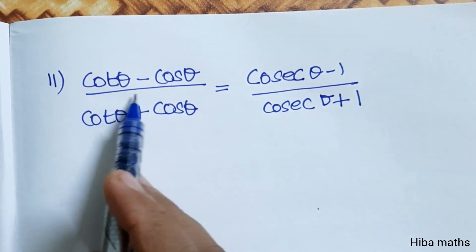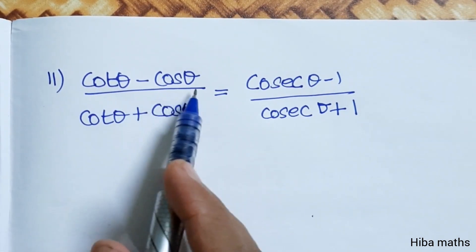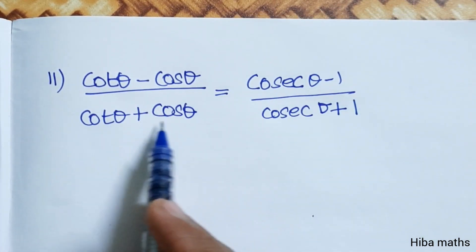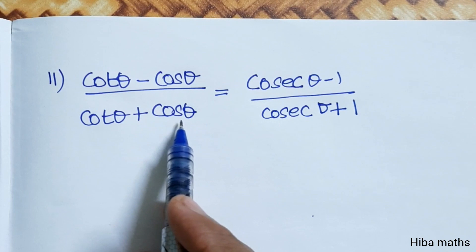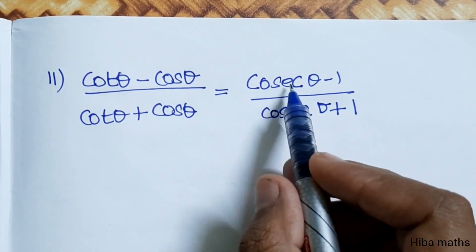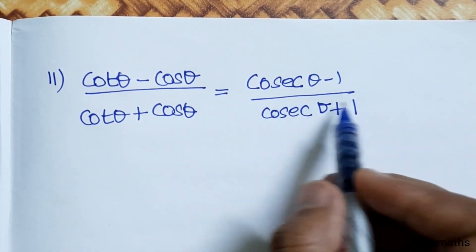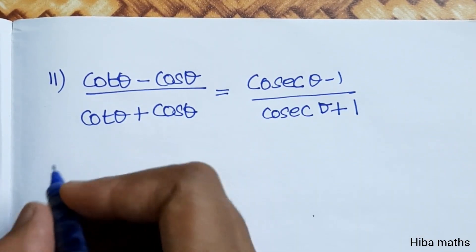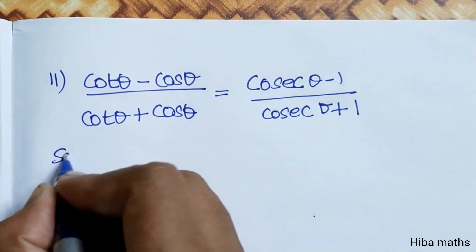Second subdivision: to prove (cot θ minus cos θ) divided by (cot θ plus cos θ) is equal to (cosec θ minus 1) divided by (cosec θ plus 1).